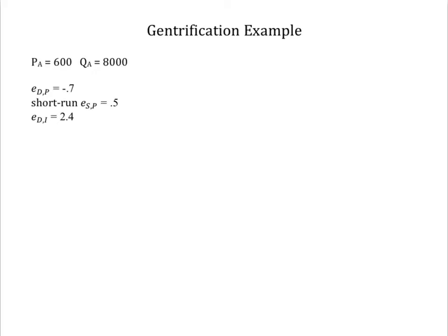Gentrification is the phenomenon in which higher income individuals move into a real estate market. The immediate effect is a big jump in rents and existing residents, particularly low income residents, request the government to institute rent controls. Suppose a typical apartment rents for $600 a month and 8,000 units are rented out each month in the initial equilibrium. Our research has revealed these elasticities, these characteristics of demand and supply. What will be the impact on the market if the influx of new residents results in a percentage change in income of 40%? A huge transformation of the neighborhood.